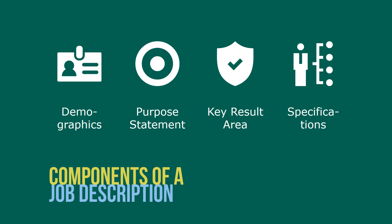Job documentation — or job descriptions — are the product of job analysis. A job description is a summary of the job. Templates are often used to streamline development of good job descriptions in an organization. These templates should contain four core elements: first, demographic information, which includes job titles, reporting structure, FLSA status, and other basic information; second, a purpose statement — a concise description of the reason the position exists; third, key result areas, sometimes referred to as essential functions of the job — short, concise statements describing the essential functions of the position; and fourth, job specifications — the knowledge, skills, and abilities, as well as the physical demands and work environments required to perform the essential functions of a job.